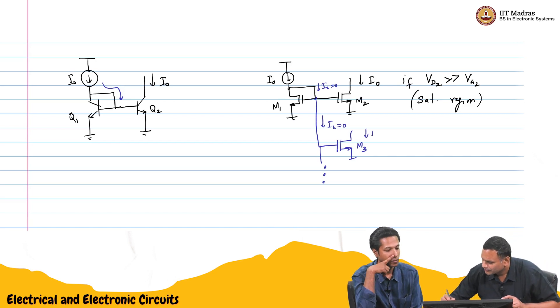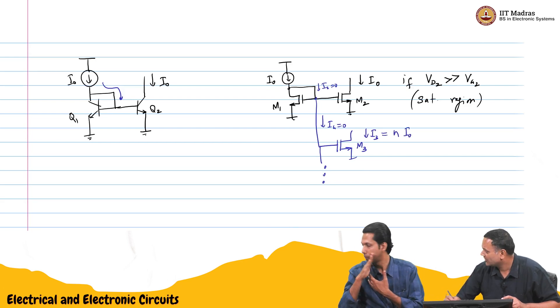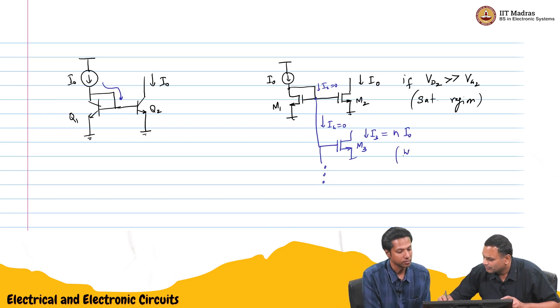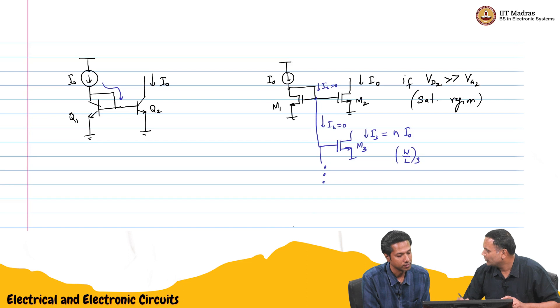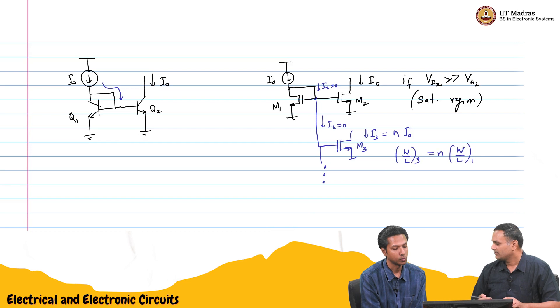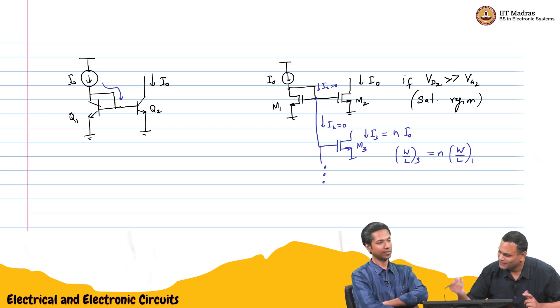If I want I₃, let's say N times I₀, then you can make W over L of 3, N times W over L. You are right. And you can also make it fractions. You can make it almost anything you want. So this is the MOSFET current mirror.